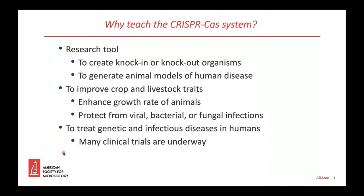An important example is the generation of animal models of human disease. The technology is also being used to improve production traits in crops and livestock. For example, a CRISPR-edited fish, the red sea bream, that grows larger than conventional fish, was recently approved for human consumption in Japan. This technology holds great promise as a treatment for human diseases, with many currently in early-stage clinical trials to treat genetic blood disorders, sickle cell disease, blood cancers, and inherited blindness.